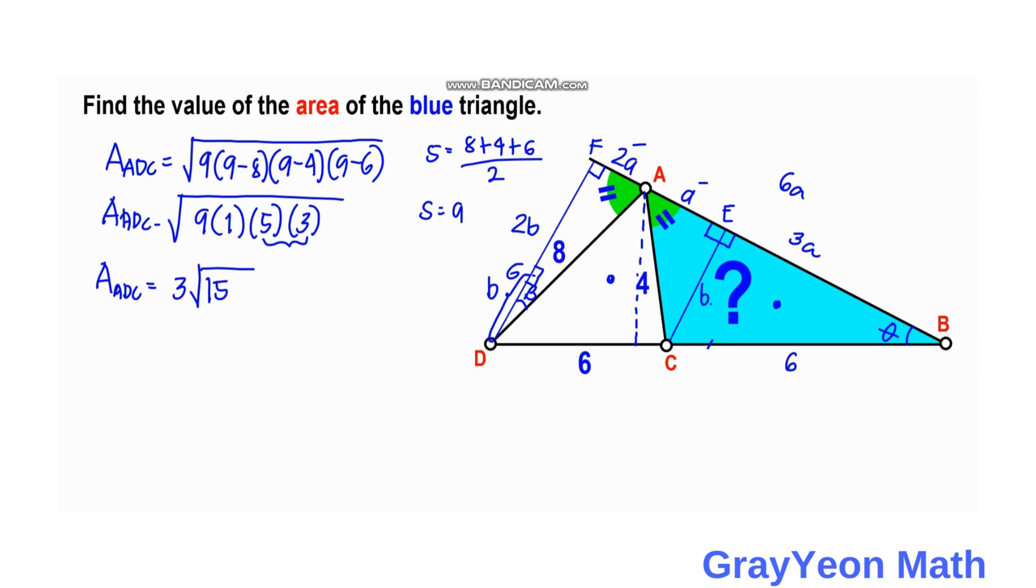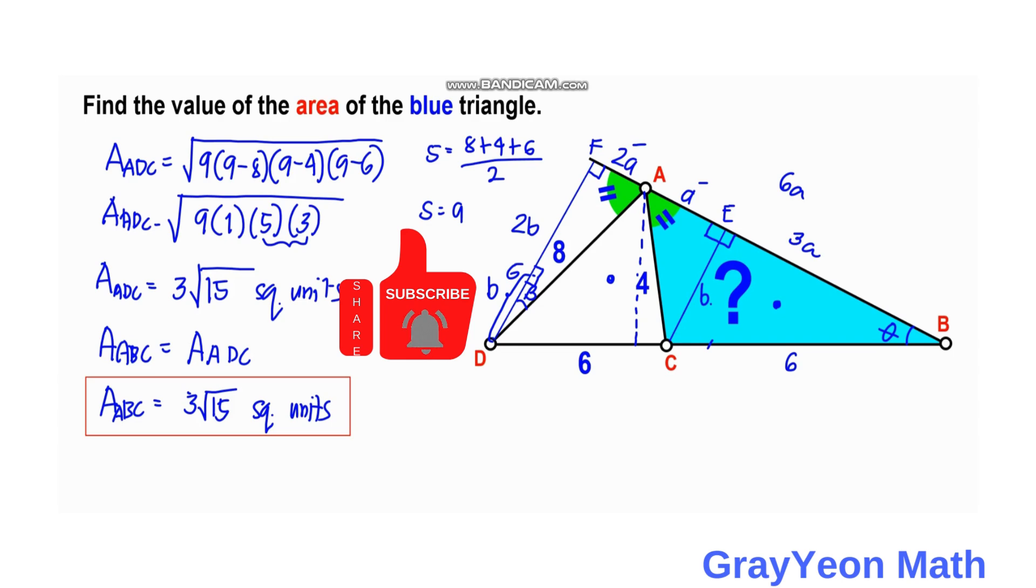And since area of ABC is equal to area of ADC, then area of ABC is equal to—if we just substitute this—this gives us 3 square root of 15 square units, and that is our answer.